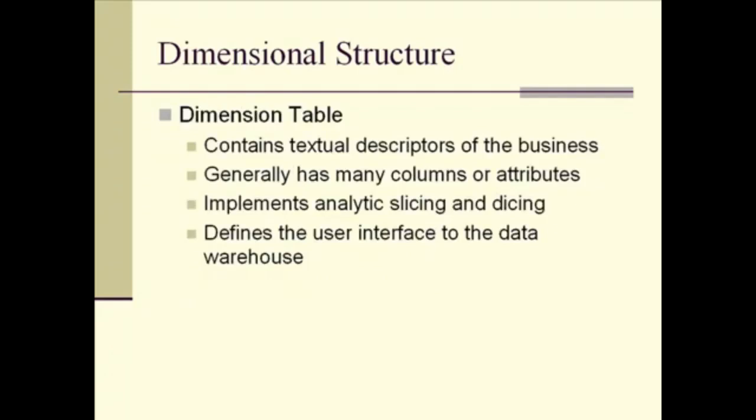Dimension tables, on the other hand, don't typically contain numbers, per se, or measures, but rather they contain the descriptors of the measures. What information is the business, how is the business interested in analyzing that information? There are generally many columns in a dimensional structure. And typically, possibly not so many rows as in the fact table. This is the customer. Businesses are interested in analyzing sales by customer. They're interested in analyzing sales by store. They're interested in analyzing sales by fiscal year. So the dimension is what helps us implement the analytic slicing and dicing. And to some extent, it really defines what the end user sees, the end user interface for the data warehouse.